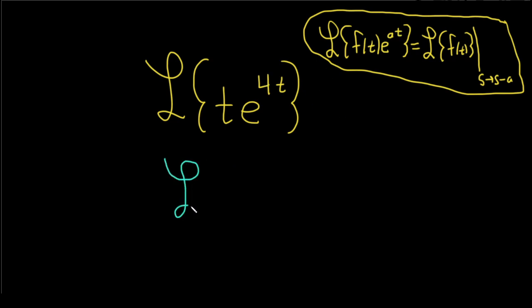So this becomes the Laplace transform of simply t, right? The e goes away, and then you draw the line, and then s goes to s minus a. So a is 4, so it's 4. Just like that. So don't forget to put the line in everything. Really, really important.